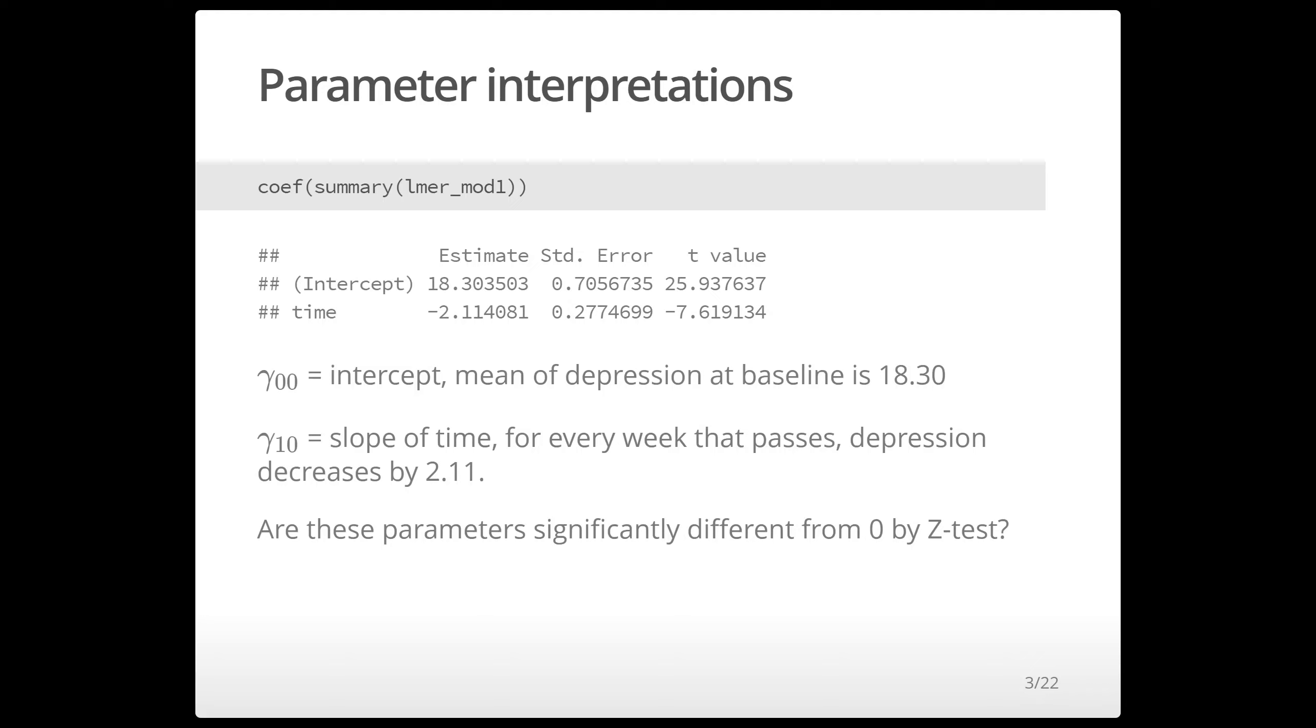The slope is as we would expect the change in depression as time passes. In this case depression decreases by 2.11 for every week that passes. This negative 7 for the time variable is a pretty large z value, so this does appear to be significant.